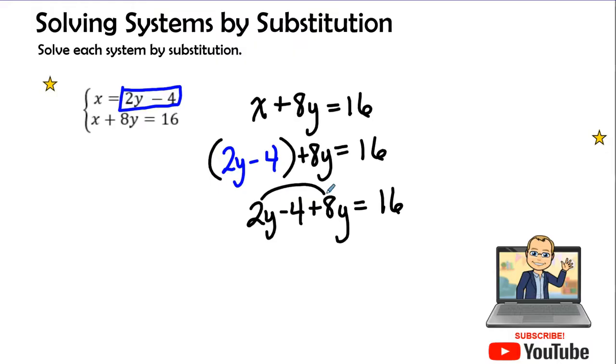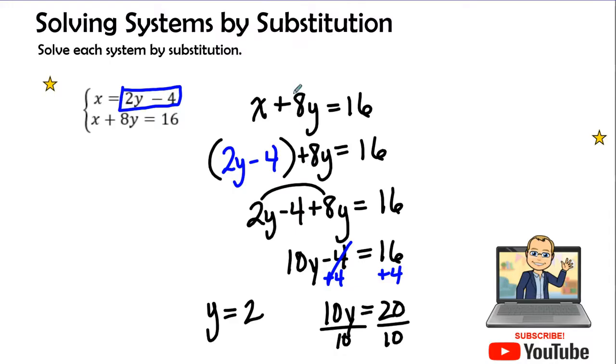So we have 2y minus 4 plus 8y equals 16. Combine like terms. 2y and 8y is 10y minus 4 equals 16. Let's go ahead and add 4 to both sides. This gives us 16 plus 4, which is 20. So now I have 10y equals 20. Divide by 10 on both sides. The value of y is going to equal 2.